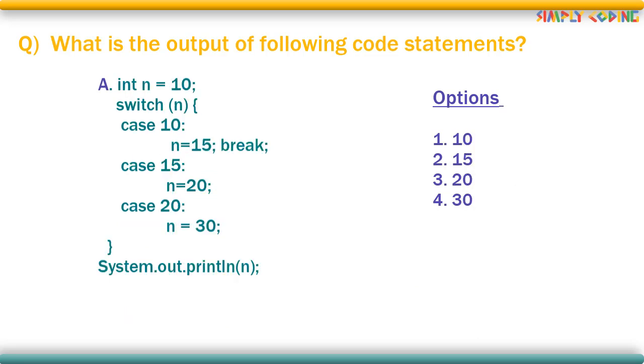Let's take a look at another program. Here what is the output of this switch block? Here since n is 10, it will enter case 10 where n is set to 15 and there is a break too at the end. Now since the value of n is changed, will it enter case 15? Answer is no. It will come out and the value of n will remain 15 only. So that is the correct option.